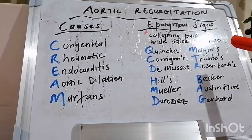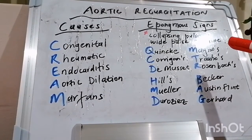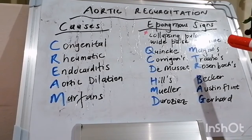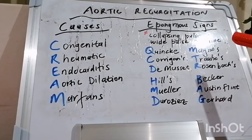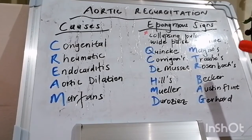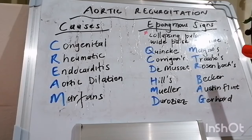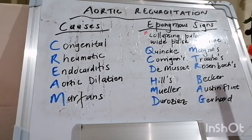Traube's sign is a double sound heard over the femoral artery on compression of the vessel distally. This is not the pistol shot sound that can be heard over the femoral artery with severe aortic regurgitation. Rosenbach's liver pulsation sign: the liver pulsates in time with the heartbeat in the absence of tricuspid regurgitation.